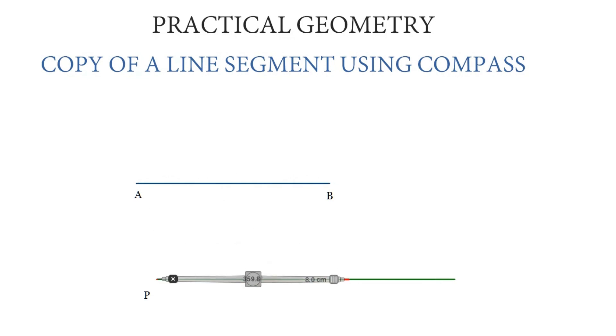With this length, place the needle of the compass on point P and draw an arc such that it cuts the line passing through point P. Mark this intersection point as Q.